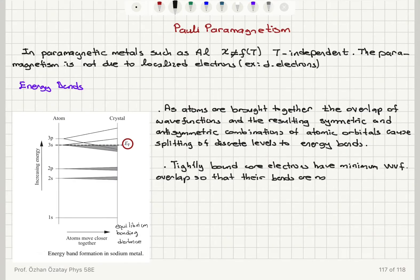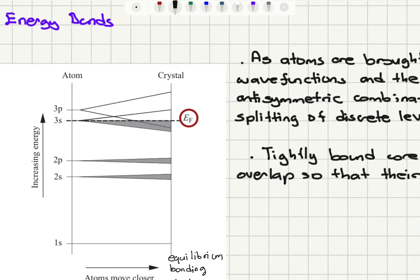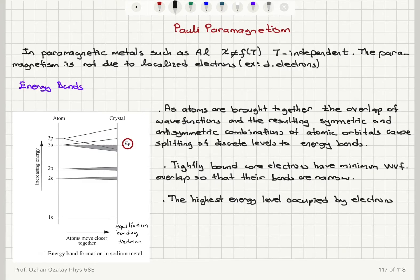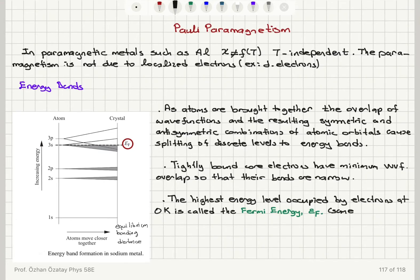These energy bands get progressively wider as we go up in energy from 1s to 2s, 2p, 3s, and 3p. There is an important energy level, the Fermi level — the highest energy level occupied by electrons at 0 Kelvin — called the Fermi energy, denoted ε_f. This level is the same regardless of spin; it does not change depending on spin and is the same for up and down spins.